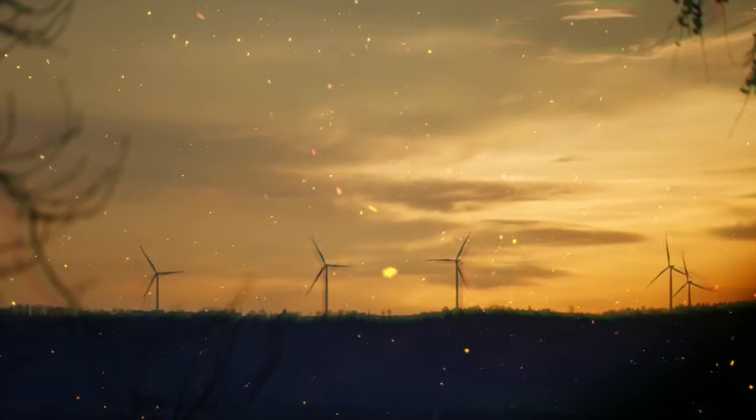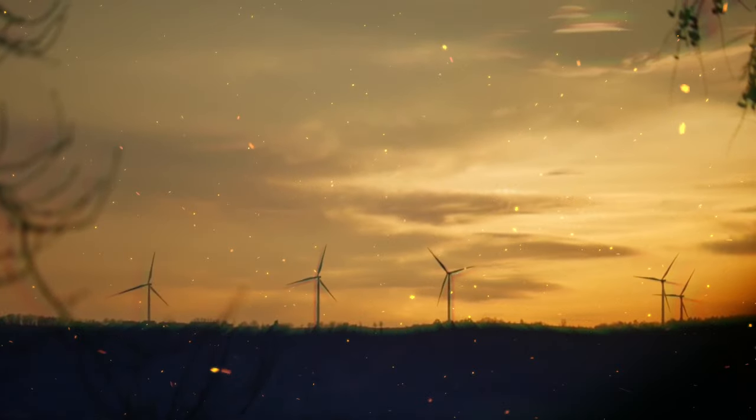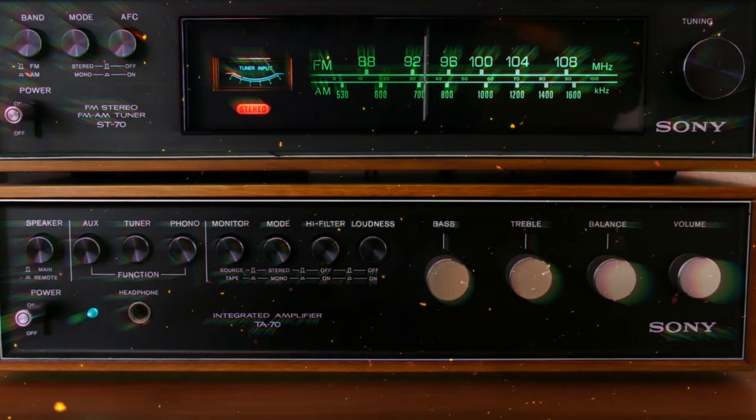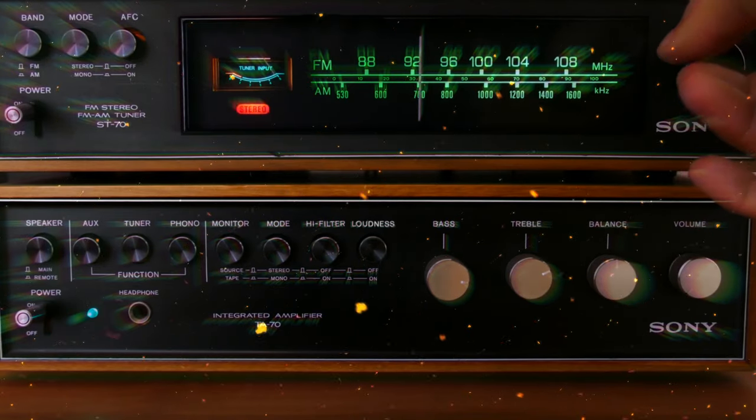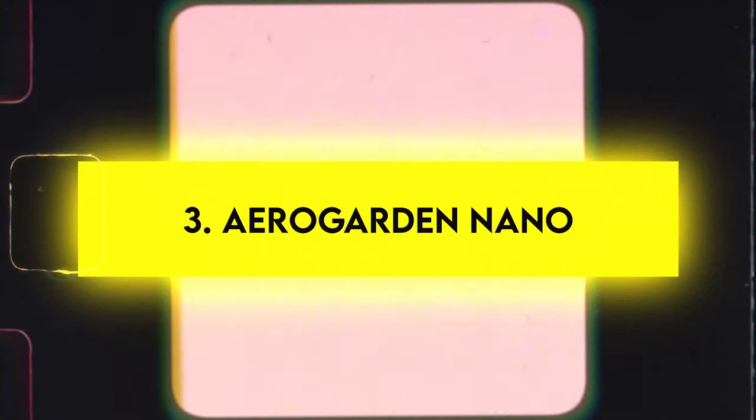Real-world application. During a power outage, you become the neighborhood hero. While others fumble in the dark, you're powering lights, charging phones, and maybe even running a small radio to stay informed. Number three: AeroGarden Nano.